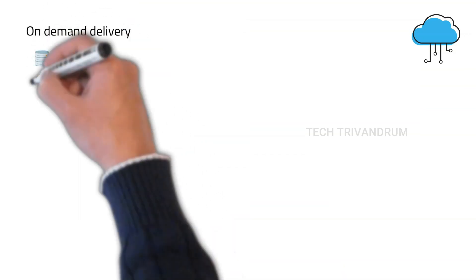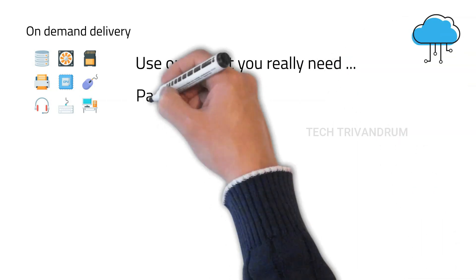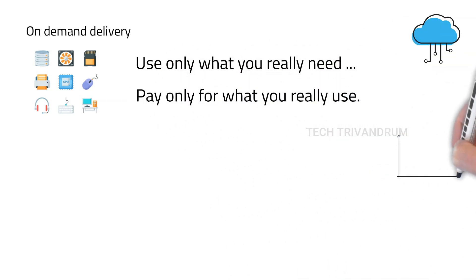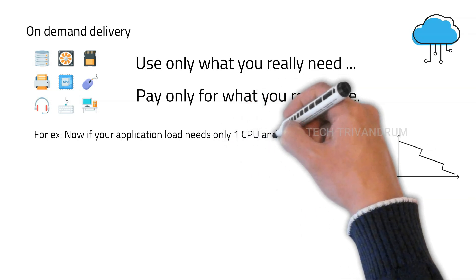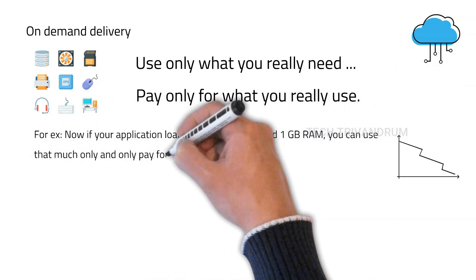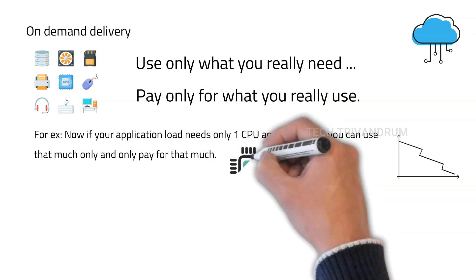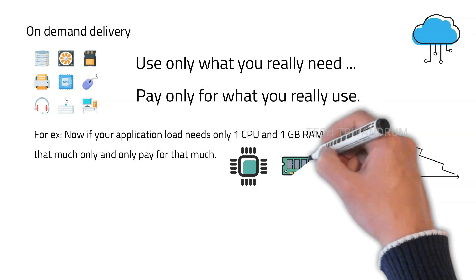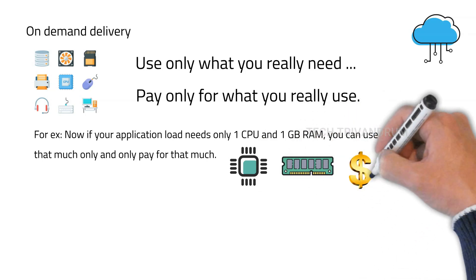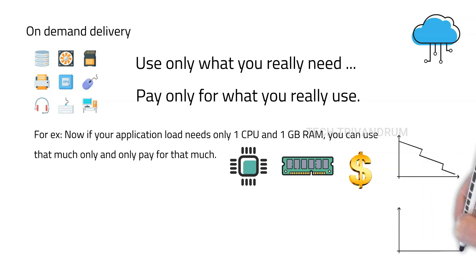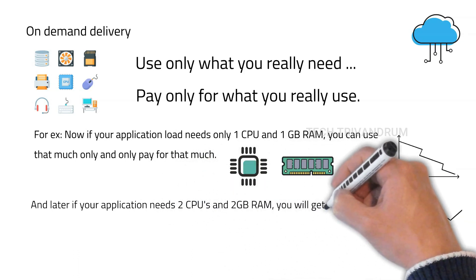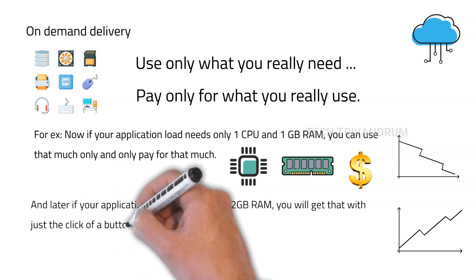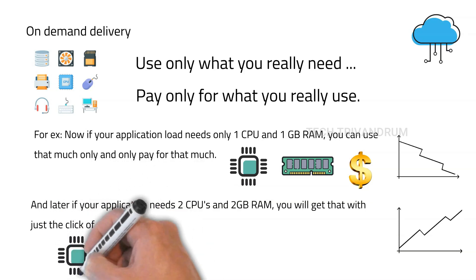To understand the on-demand delivery and pay-as-you-go pricing model more, consider that now your business is not going well. Naturally, your application needs only very low resources — you can scale down, for example, to one CPU and one GB of RAM, and you have to pay only for that. No need to pay anything extra. Later, if your business grows and your application needs more resources, for example two CPUs and two GB of RAM, with just the click of a button we can provision that in a cloud computing model. This is the scalability and flexibility a cloud offers when compared to an on-premises setup.